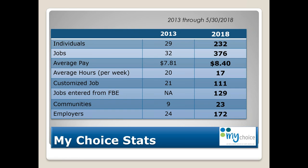Jobs entered from facility-based employment is at 129. We're looking to transform all of our worksites — we previously had sites in Spirit Lake, Estherville, Spencer, Sibley, Rock Valley, and Worthington, and now we're down to two sites. Making progress — it's not an overnight thing. We have a five-year strategic plan that we're four years into, and we just keep moving with the same motivation we've had from the very beginning.